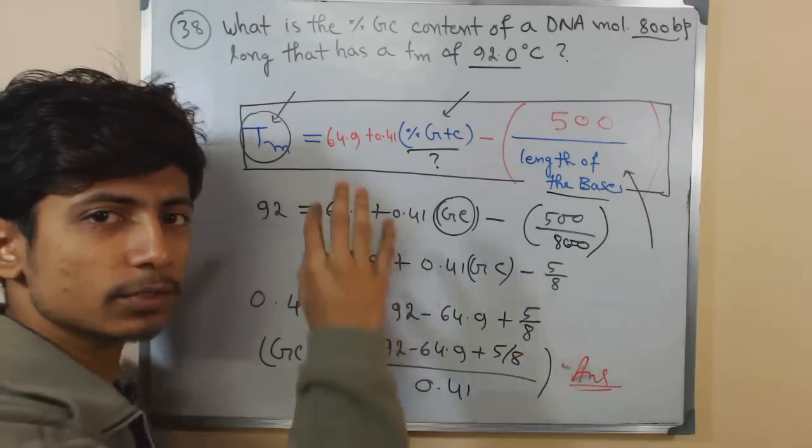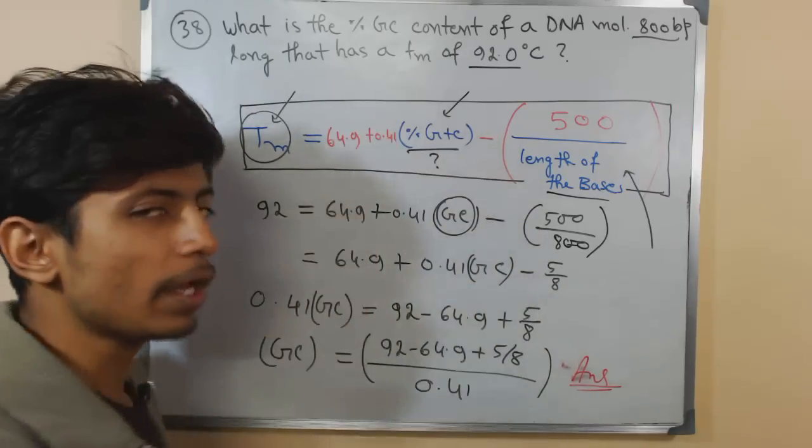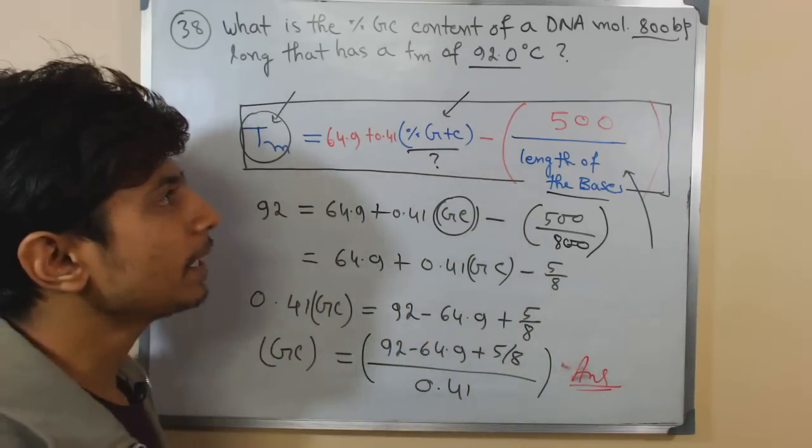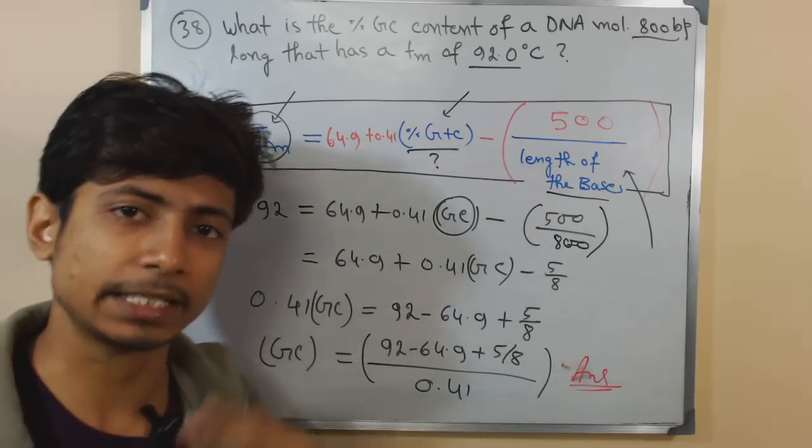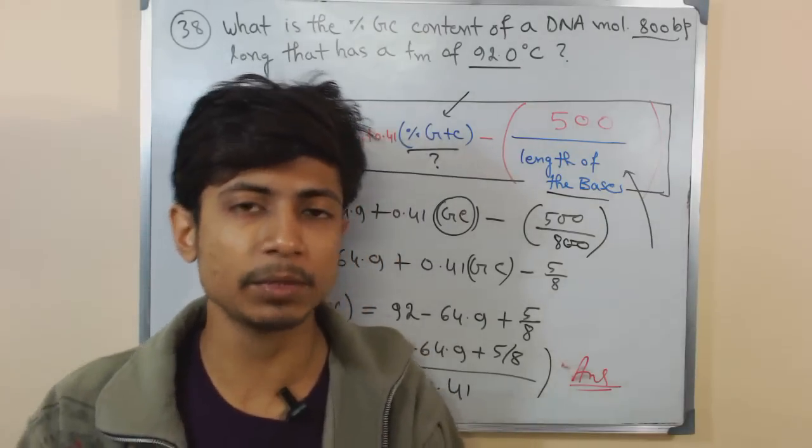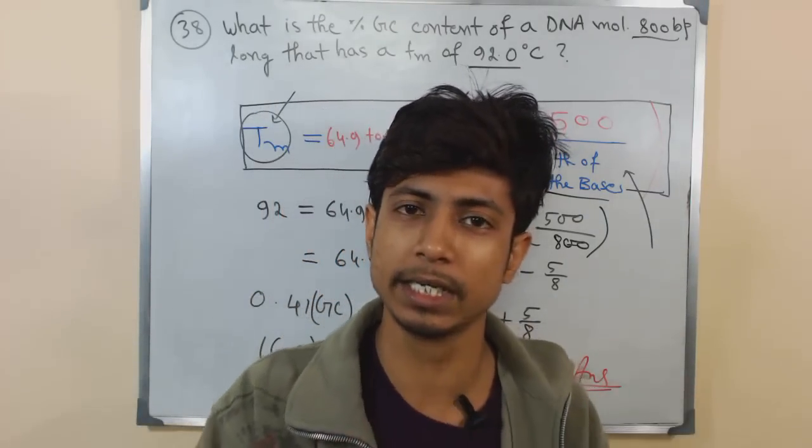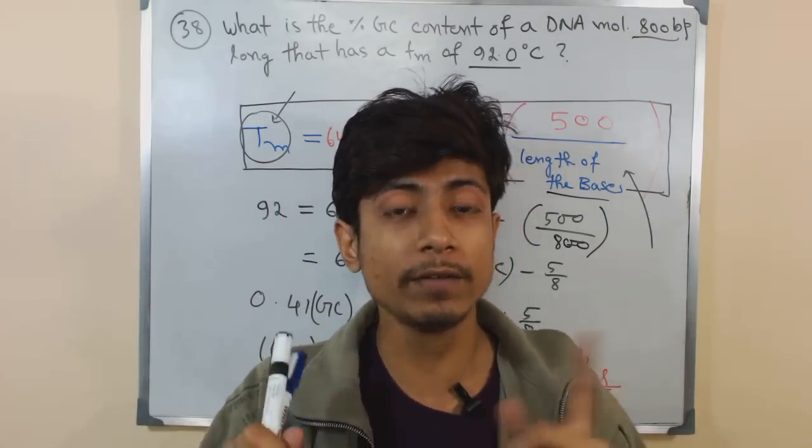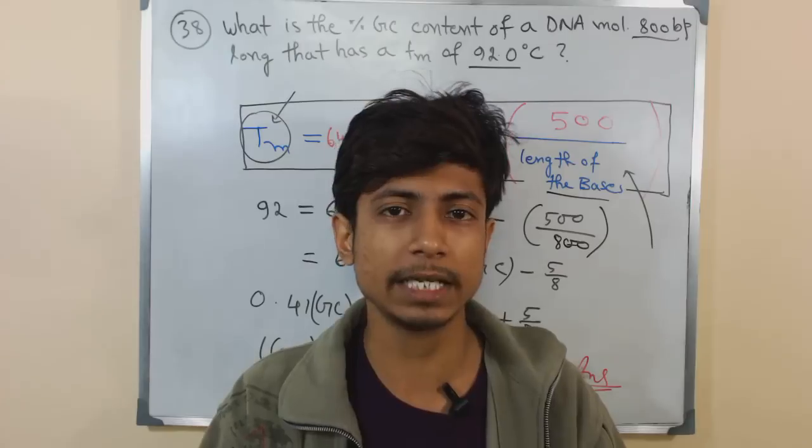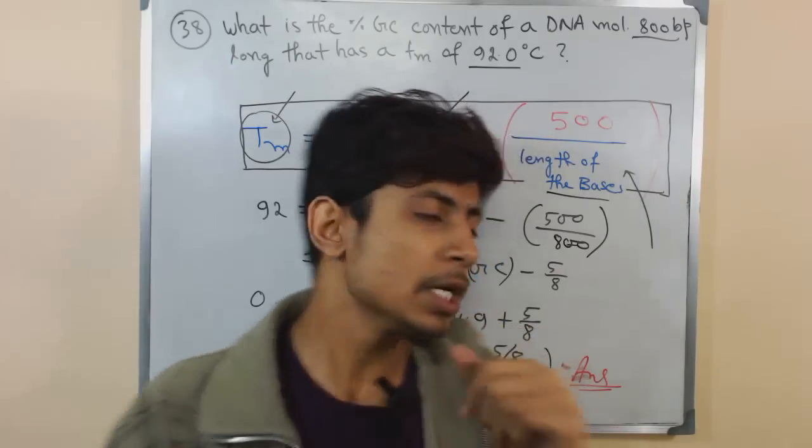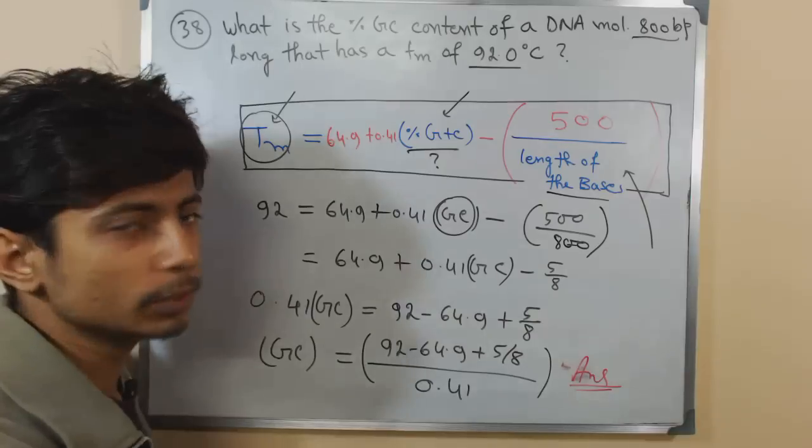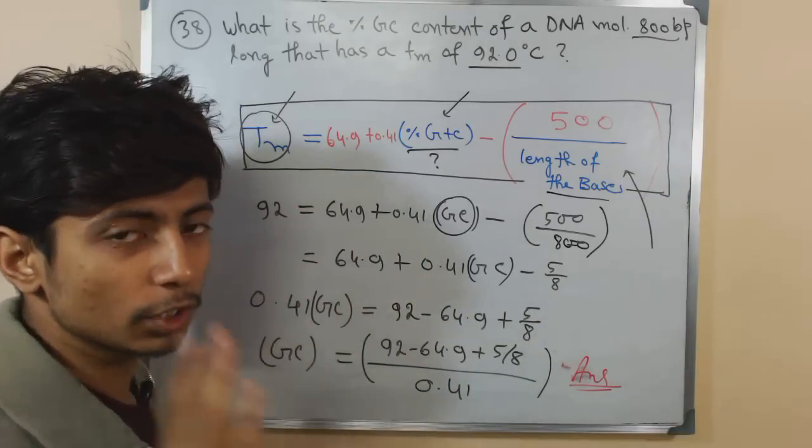I think the major thing to understand to solve this problem is this formula. Once you understand this formula, you can answer anything. You can get the GC content value by knowing Tm, you can get Tm by knowing GC content and DNA bases available, or even calculate the length of the DNA by knowing the GC and Tm together. That's the beauty of the formula.